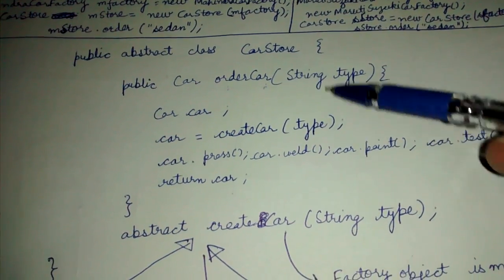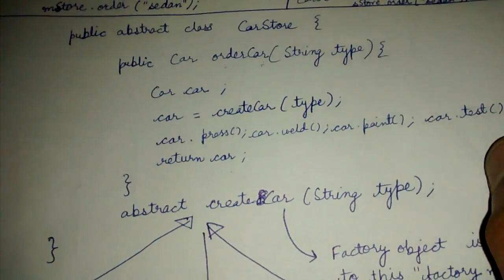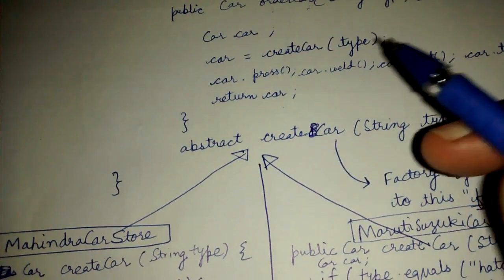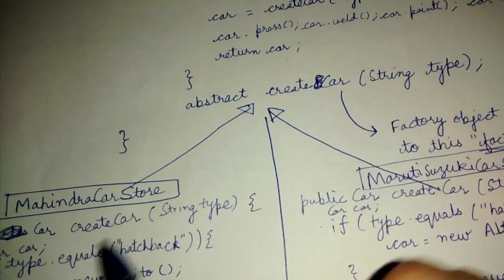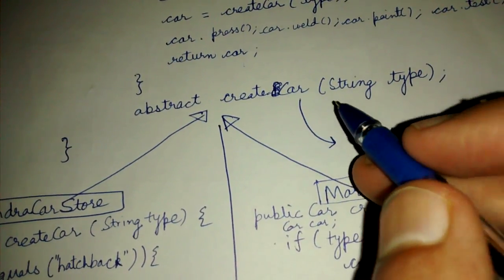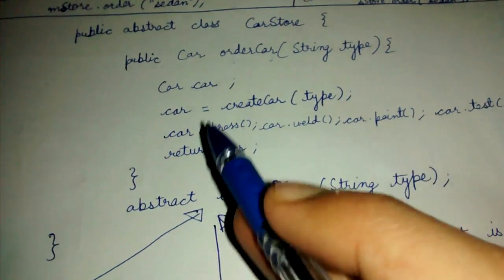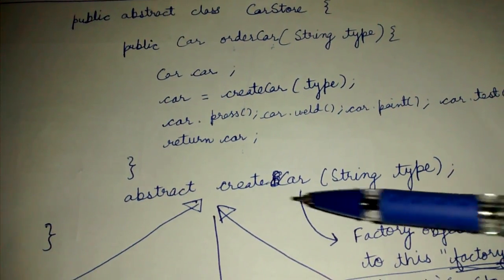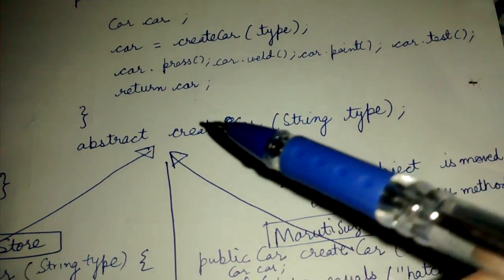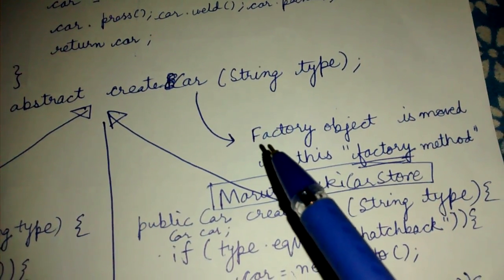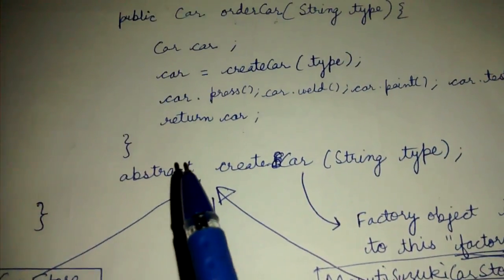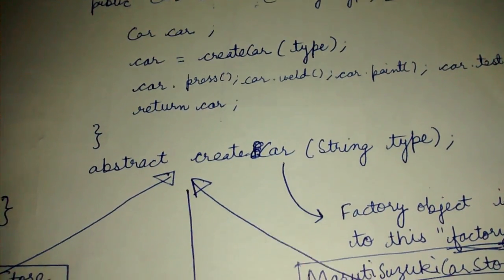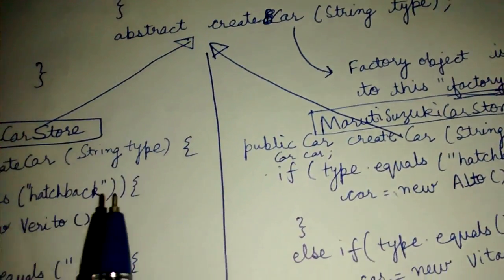So Mahindra car store and Maruti Suzuki car store both have to follow and obey these implementations. But I don't know how to create a car yet, so that part — creating the actual car objects — I leave to the actual car stores. Creating is part of the factory object, and so here we have this method create car. The factory object is now no longer existing; we have a factory method — this method will create the car and return it.